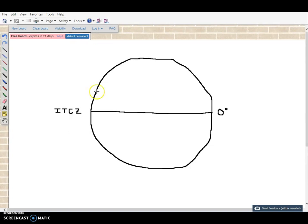Here I've drawn the ITCZ, the intertropical convergence zone, at the equator. I'm going to draw the subtropical highs at 30 degrees north and south. There, I have both 30 degrees north and south, two subtropical highs.